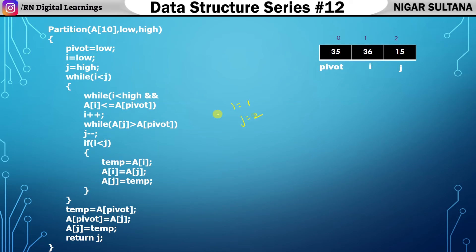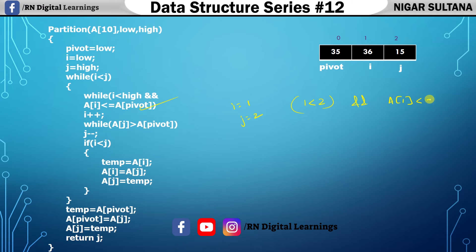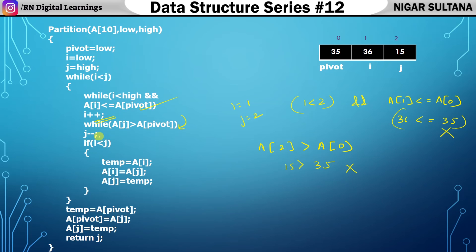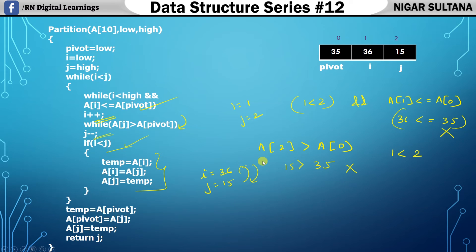I is now one, j is two. Check again: is 1 less than 2 and a[1]=36 less than or equal to a[0]=35? This is false — stop incrementing. Check the j while loop: is a[j]=a[2]=15 greater than a[pivot]=35? This is also false — no decrement needed. Check the if condition: is i=1 less than j=2? True — swap. I value is 36 and j value is 15 — they get swapped. 15 moves to position one and 36 moves to position two.